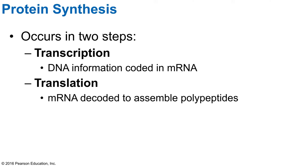Protein synthesis occurs in two steps. The first is transcription — taking information from DNA and coding it into mRNA. This occurs inside the nucleus. The second is translation — taking the mRNA and assembling a polypeptide chain. This occurs in the cytosol of the cell, outside the nucleus.